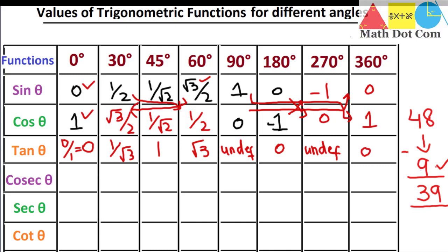Now cosecant, secant, and cot. The values of these three functions will be the reciprocal of the values in the first three rows. Cosecant 0 is the reciprocal of sine 0, which is 1 divided by 0 — undefined. Keep in mind: 1 divided by 0 and 0 divided by 0 are both undefined. Cosecant 30 is 2 over 1, which is 2. Cosecant 45 is root 2. Cosecant 60 is 2 divided by root 3. Cosecant 90 is 1. Cosecant 180 is 1 divided by 0 — undefined. Cosecant 270 is 1 divided by minus 1, which is minus 1. Cosecant 360 is 1 divided by 0 — undefined.